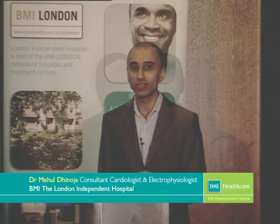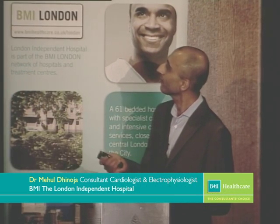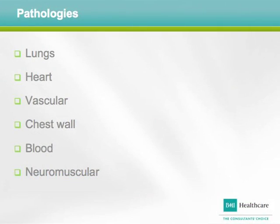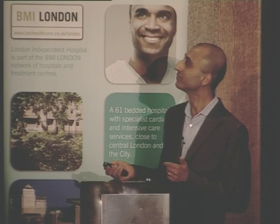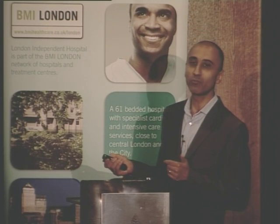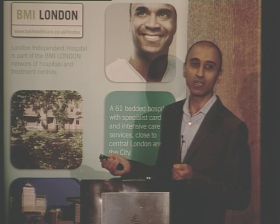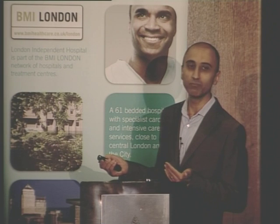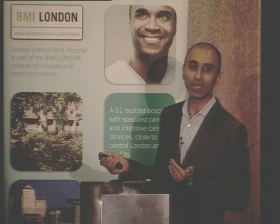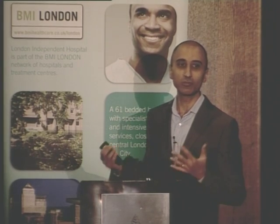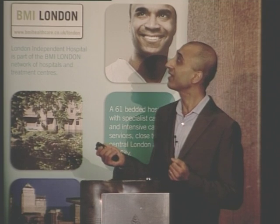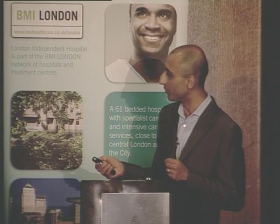This is a talk on diagnosing breathlessness. The main organs responsible for causing breathlessness are the lungs, the heart, a vascular problem, a chest wall problem, a problem with the blood, or a neuromuscular problem. The most obvious blood problem is severe anemia. Neuromuscular causes include muscular dystrophy. Chest wall abnormalities like kyphoscoliosis can restrict lung movement and lead to breathlessness. Vascular, heart, and lung causes will be discussed in more detail.